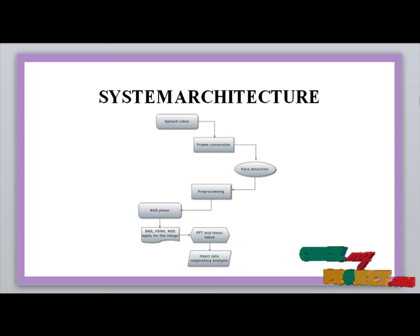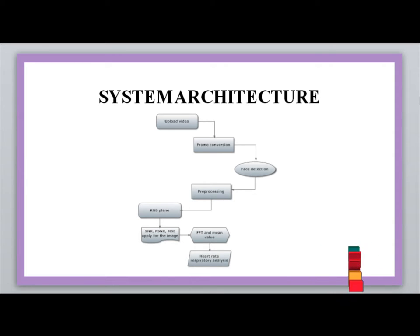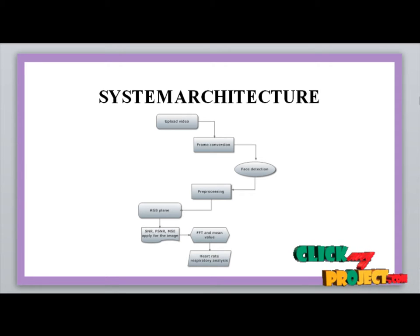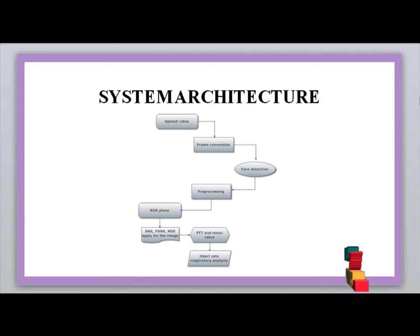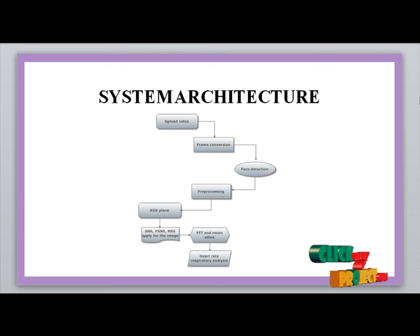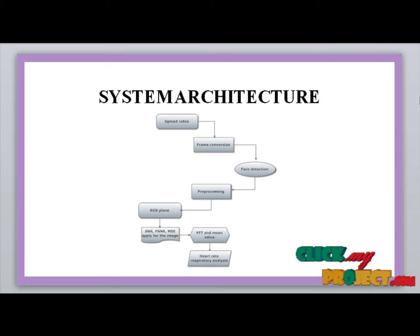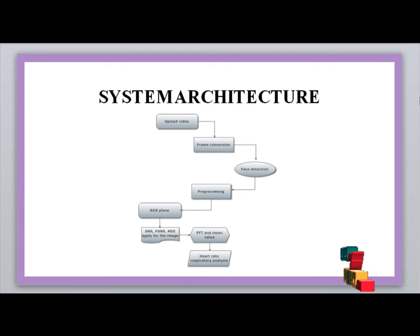The main system architecture flow is as follows: first, select a dataset from your base paper or any reference. Upload the selected video from the path. After uploading, the video undergoes frame conversion. After frame conversion, frames are separated row and column-wise and stored in a separate folder. The number of frames is determined, and end frames are taken for further processing.